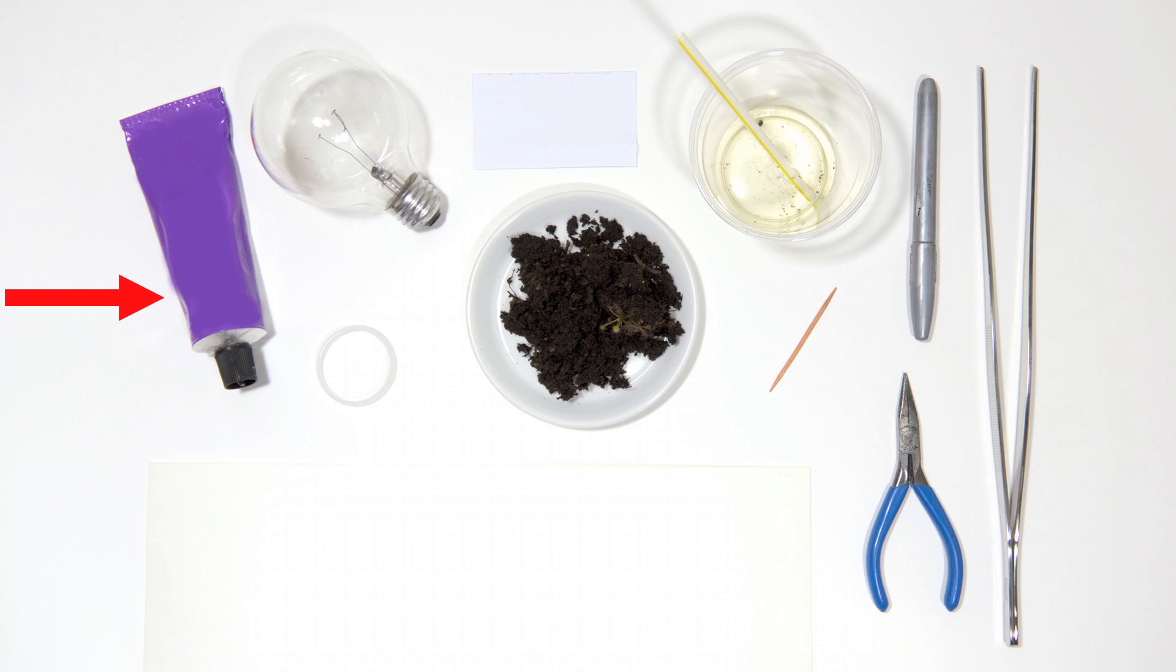The first thing one will need is some craft glue. The next thing needed is an old incandescent light bulb. Remember these? You will also need a one and a half inch poly washer to serve as the base of your terrarium.